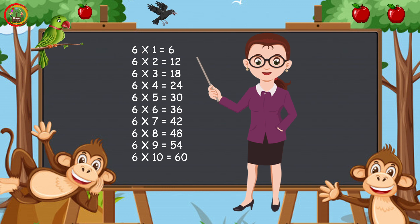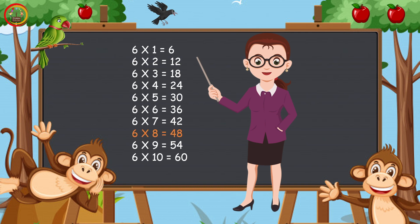Let's repeat. 6 ones are 6, 6 twos are 12, 6 threes are 18, 6 fours are 24, 6 fives are 30, 6 sixes are 36, 6 sevens are 42, 6 eights are 48, 6 nines are 54, 6 tens are 60.